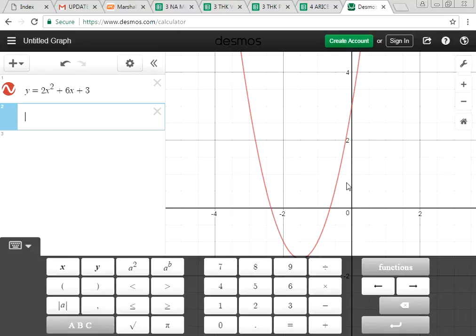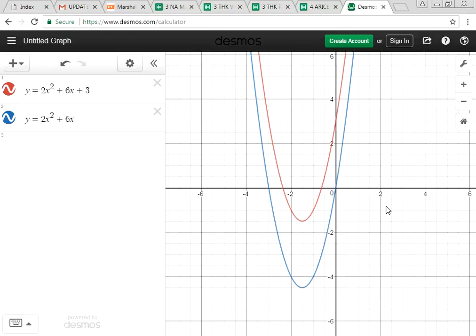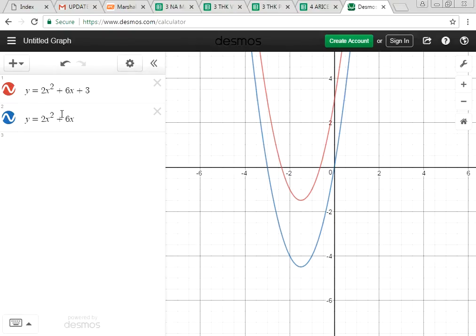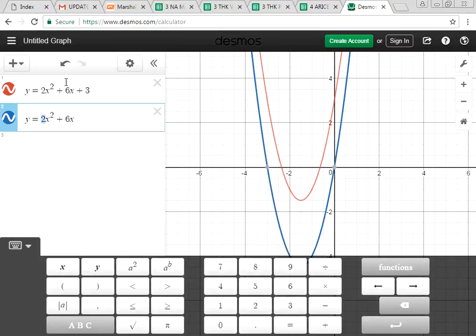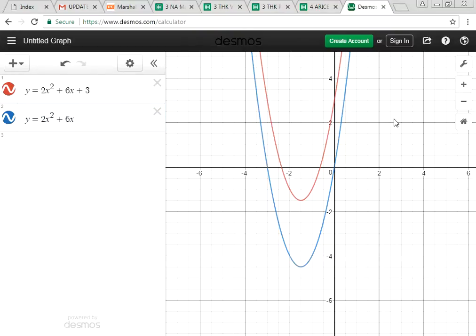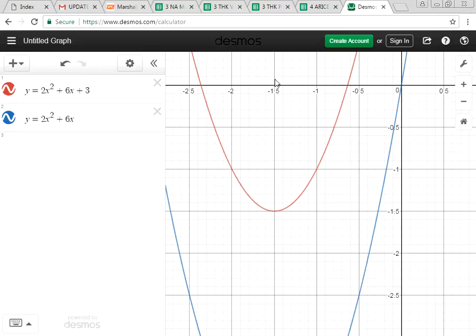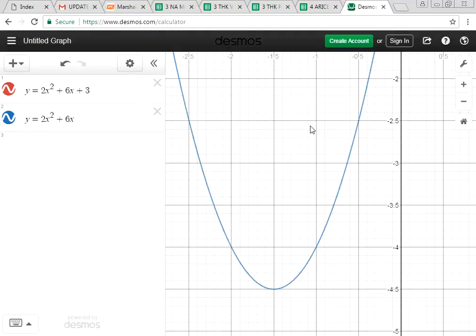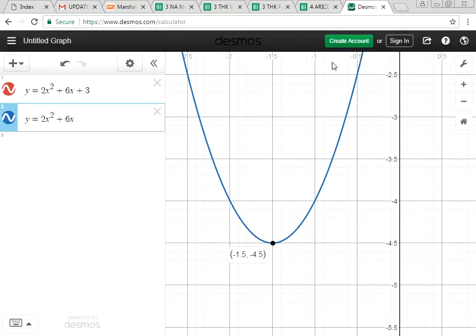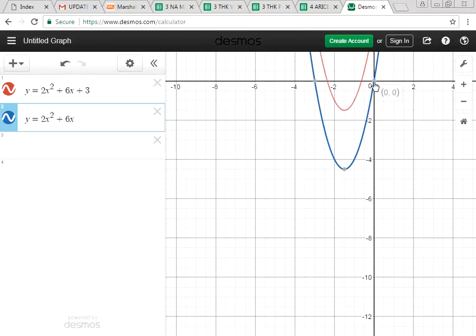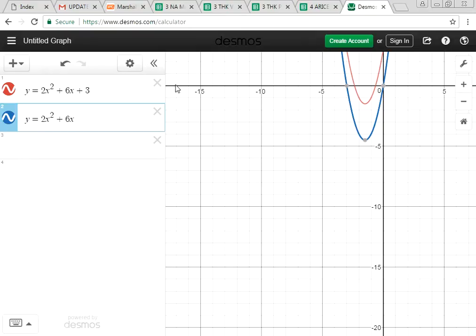Next graph, we have y equals to 2x squared plus 6x. It's blue color now. Again, parabola opening upwards. You notice the coefficient of x squared, as long as it is positive, it will open upwards. Line of symmetry is x equals to negative 1.5, minimum point is negative 1.5, negative 4.5. Number of times cutting the x-axis is 2, and y-axis is 1.